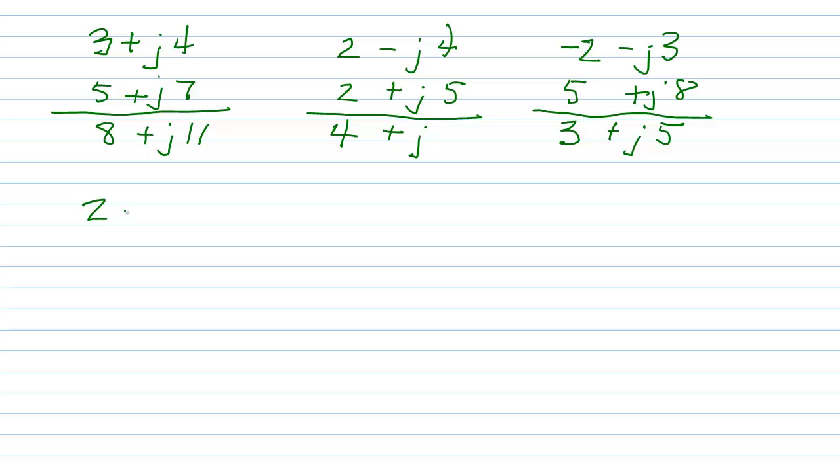2 plus J7 plus minus 2 minus J10 equals 0, and plus J7 minus J10 is minus J3, which is simply a pure imaginary number.